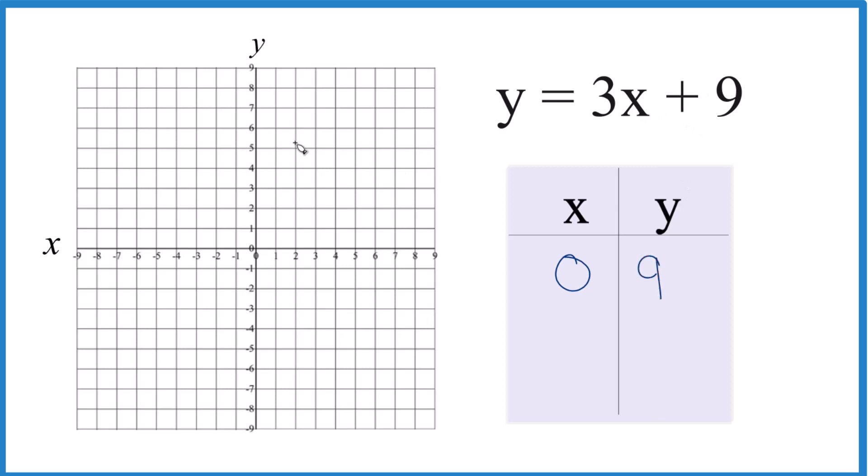And I'm just choosing values that I think will be easy to compute and will fit on the graph paper. If I put a 1, 3 times 1, that's 3. 3 plus 9 would be outside of my graph paper.